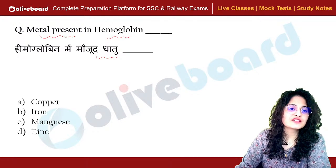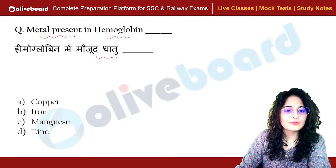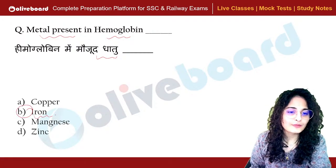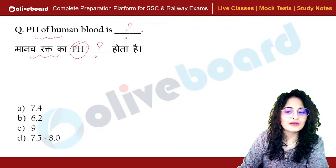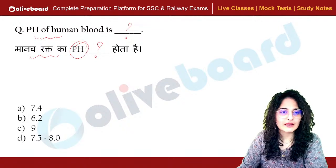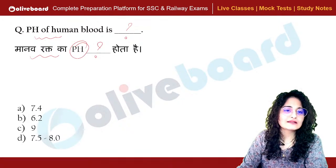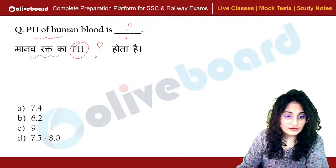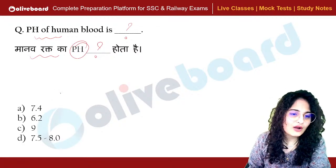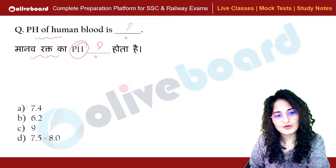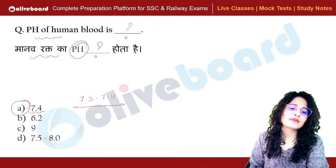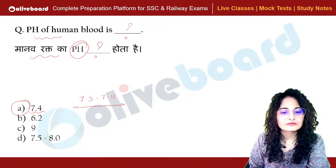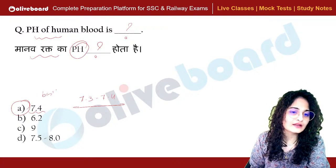Which metal is present in the human body? Iron is present in hemoglobin. Is blood acidic or basic? Normally blood pH is 7.3 to 7.4 — so it is slightly basic, not acidic.